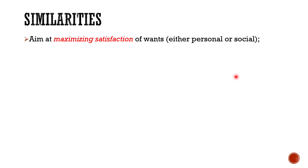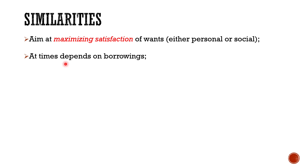Moving to similarities: first, both aim at maximizing satisfaction of wants — either personal or social. Both the state and individuals aim at satisfaction of human wants through their financial operations. Individuals spend their income to satisfy personal wants, whereas the state spends for satisfaction of communal or social wants. Second, at times both may depend upon borrowings — both the state and individuals have to depend on borrowings when their expenditure exceeds their income.